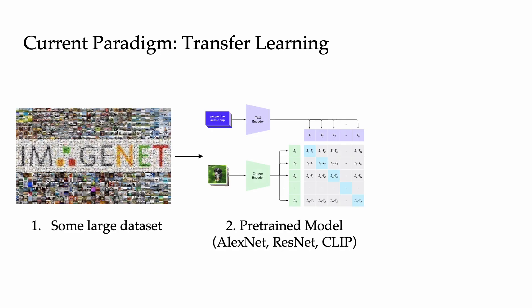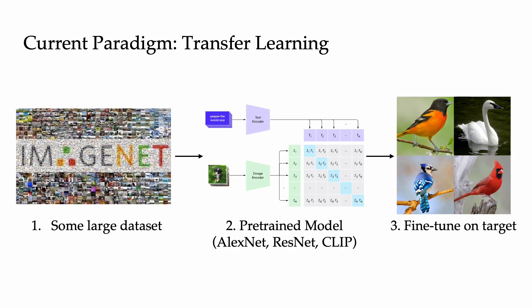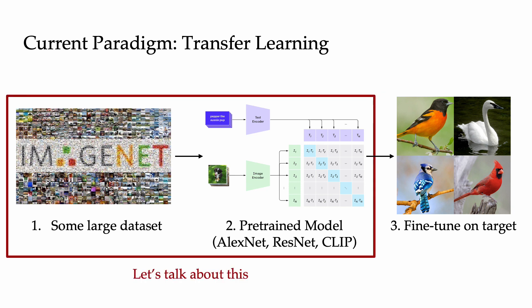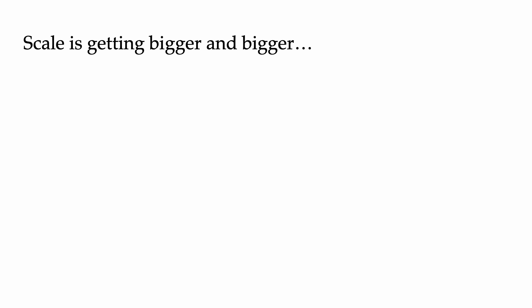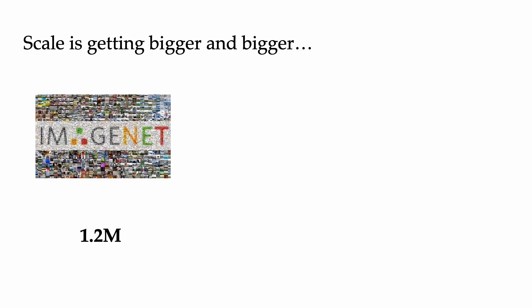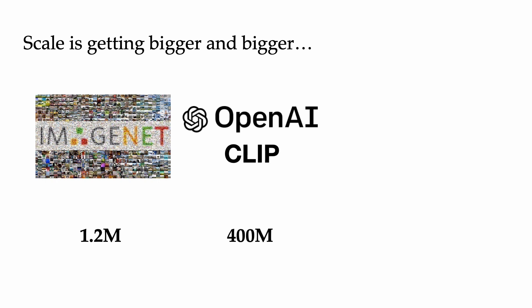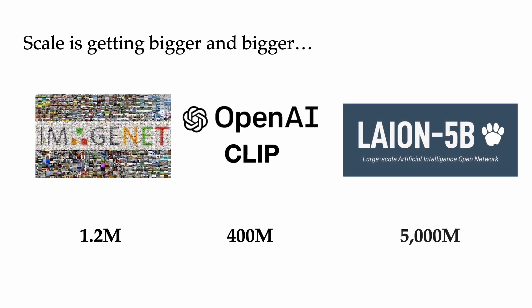What you'd probably do is transfer learning, where someone uses a large dataset to pre-train a model which you then fine-tune on your target dataset. I want to talk more about this pre-training process. Our pre-training datasets are getting bigger and bigger. ImageNet has 1.2 million images, CLIP was trained on 400 million image-caption pairs, and the recently released Leon dataset even has 5 billion image-caption pairs.